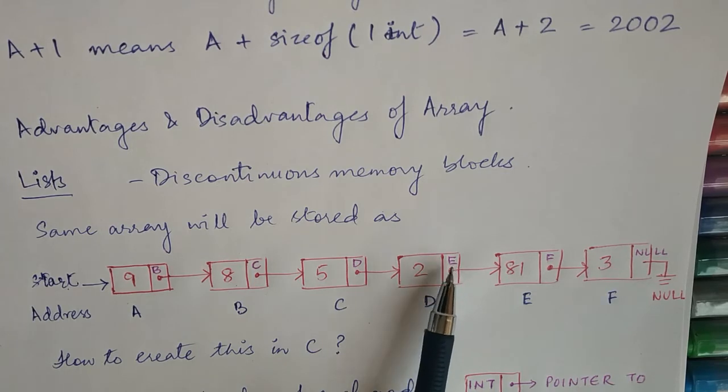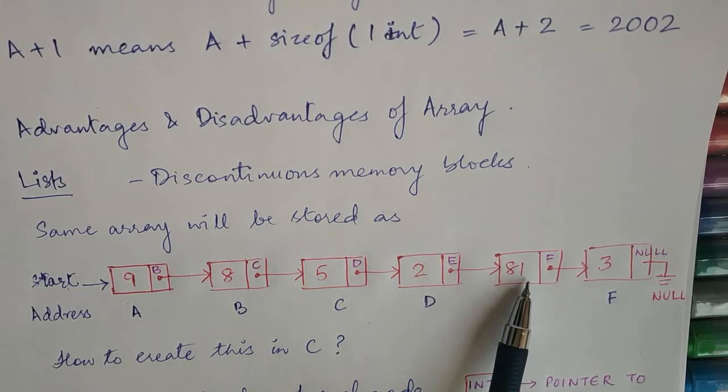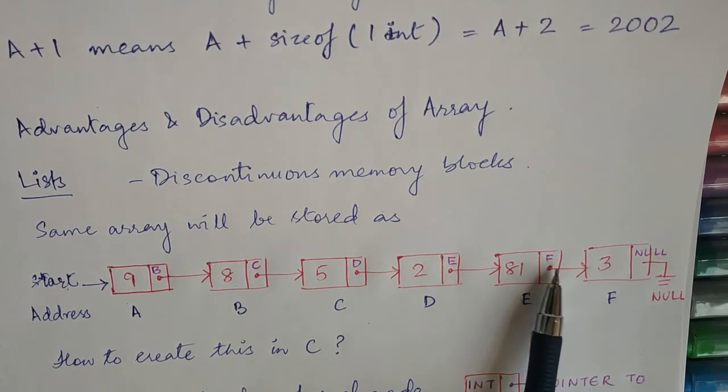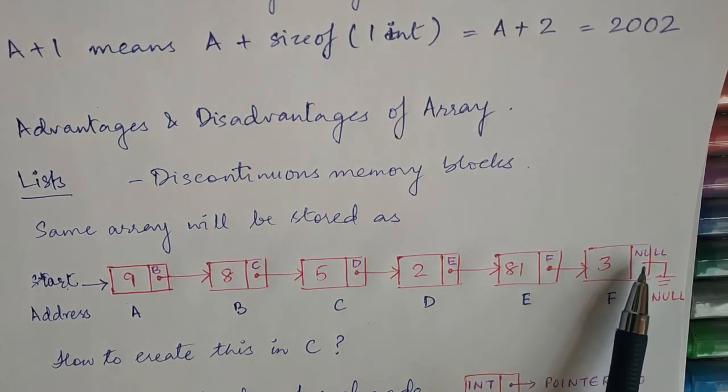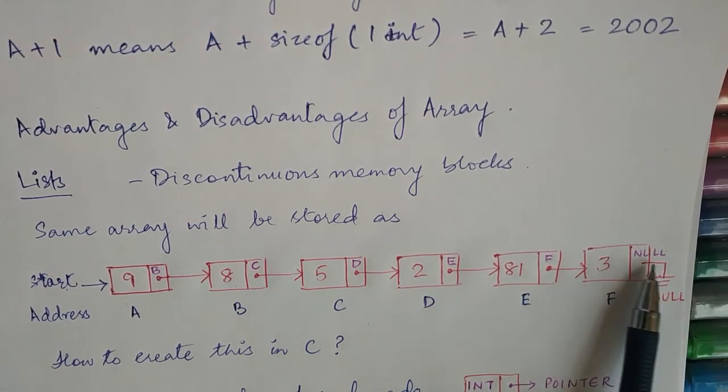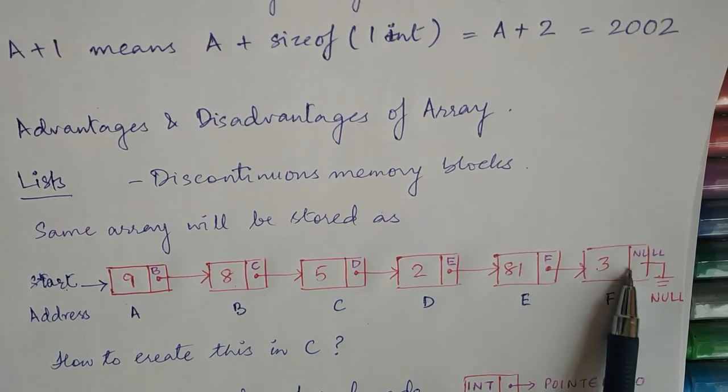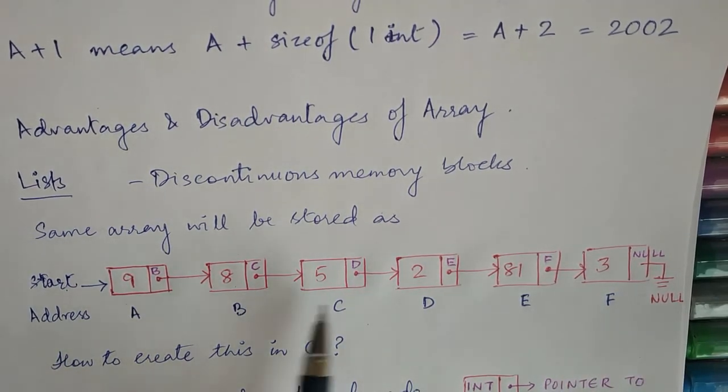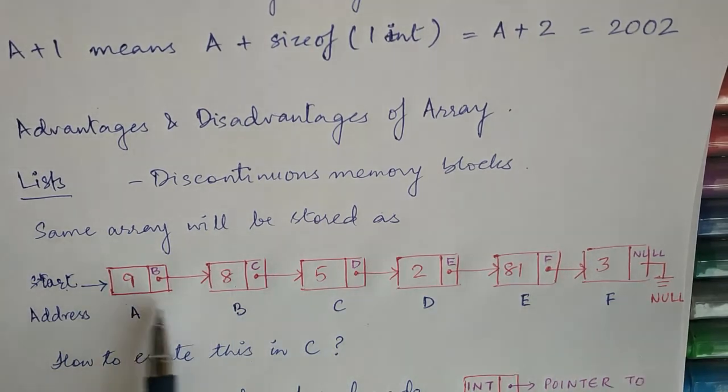2 has E which is the address of next node 81. 81 has the address of 3 which is F. And 3, since there is no element after 3, 3 is the last element. 3 does not point to any node. We say it is grounded or we say the next field of this node is filled with null.